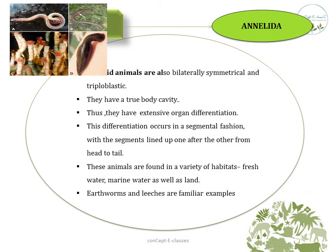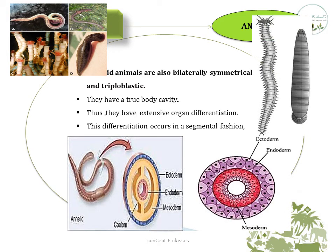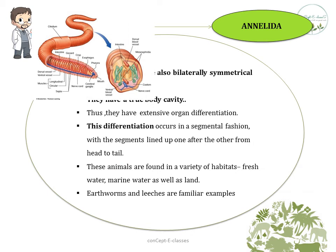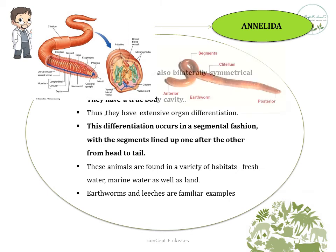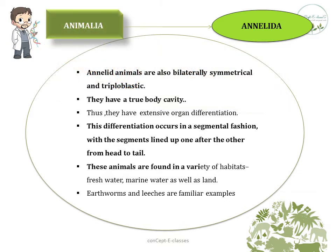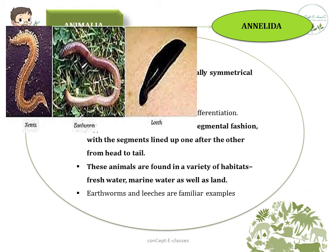The next division is Annelida. Annelid animals are bilaterally symmetrical and triploblastic — having three layers: endoderm, ectoderm, and mesoderm. They have a true body cavity, allowing extensive organ differentiation. This differentiation occurs in a segmental fashion, with segments lined up from head to tail. Observing these organisms, the body is divided into many ring-like segments. These animals are found in a variety of habitats including freshwater, marine water, and land. Examples are earthworms and leeches.